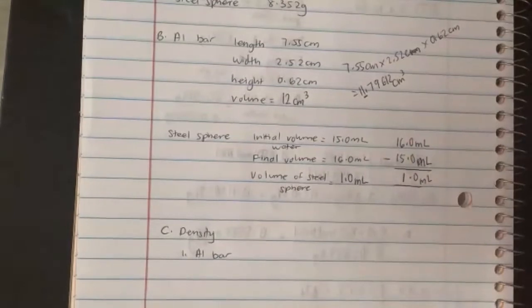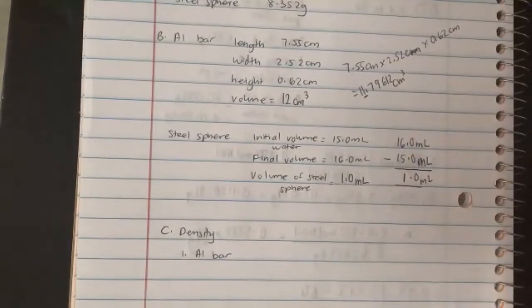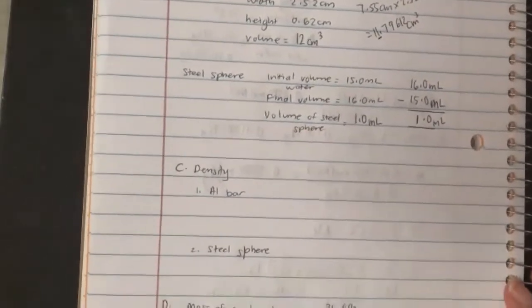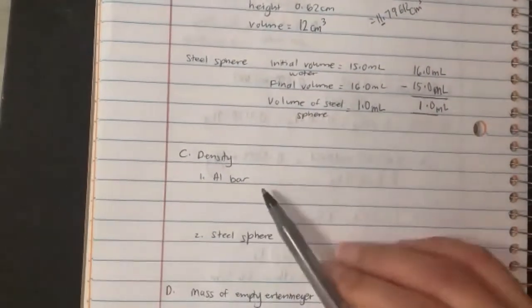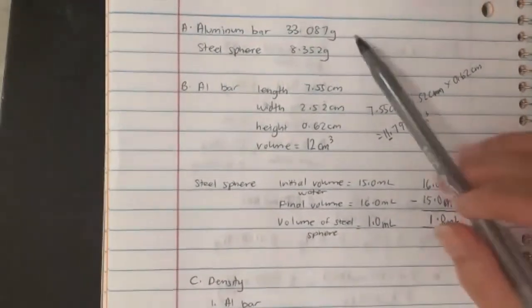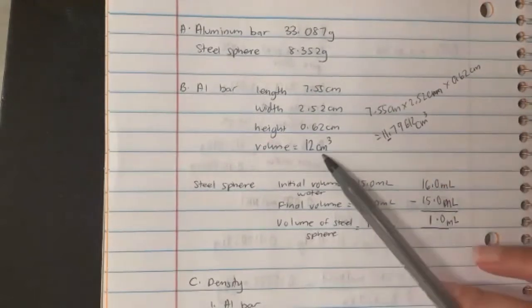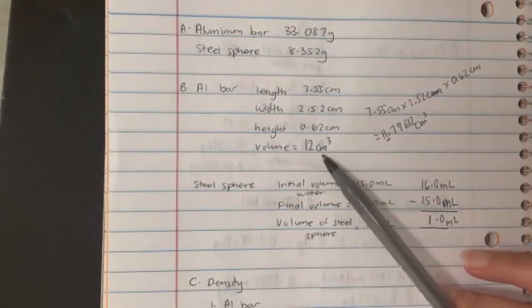Remember, when you're adding or subtracting, you are looking at decimal places. Now let's do density. Density is mass over volume, which is why earlier we had data for mass. We'll take this mass divided by this volume.